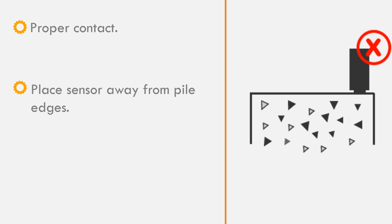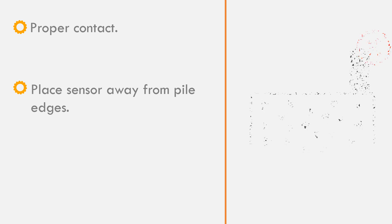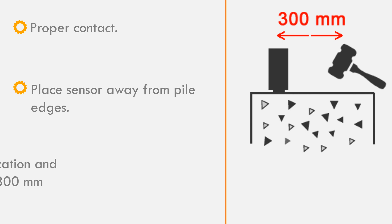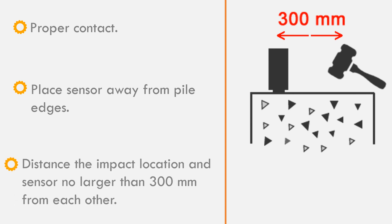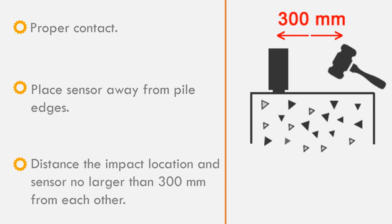Then a hammer is actually used to impact the pile top. The distance between the impact location and the sensor should be no larger than 300 millimeters. Several impacts are applied to the top of the pile.